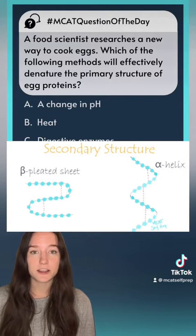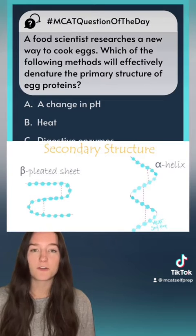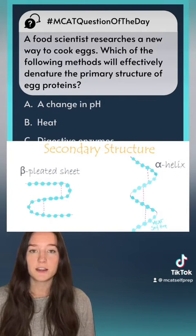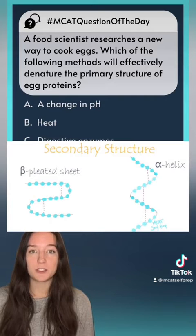Next is the secondary structure, which you probably know from the alpha helices and the beta pleated sheets. These structures are formed because of the hydrogen bonding between the amino acids in the backbone.